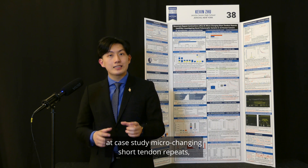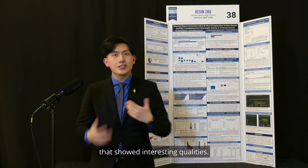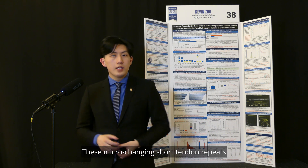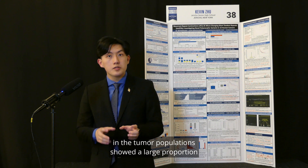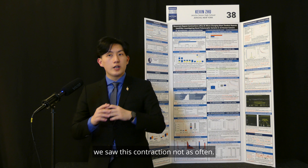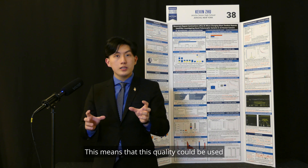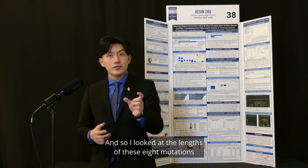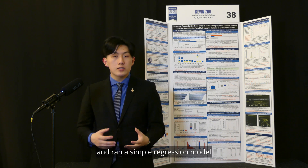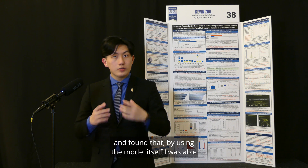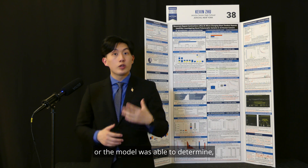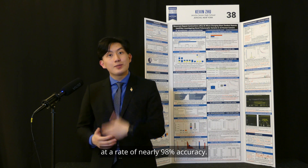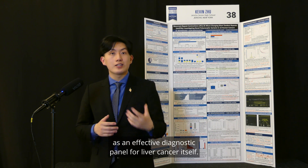I then conducted a case study analysis, highlighting a set of eight mutations in liver hepatocellular carcinoma, or liver cancer. These microchanging short tandem repeats in tumor populations showed a large proportion of contractions, whereas in a normal population, this contraction was not seen as often, suggesting it could be used to detect whether a sample was tumor or not. I looked at the length of these eight mutations across 454 liver cancer patients and ran a regression model, finding that the model was able to determine whether a specific sample was tumor or normal at a rate of nearly 98% accuracy — meaning we could use these mutations as an effective diagnostic panel for liver cancer.